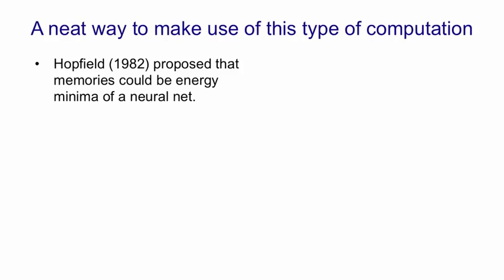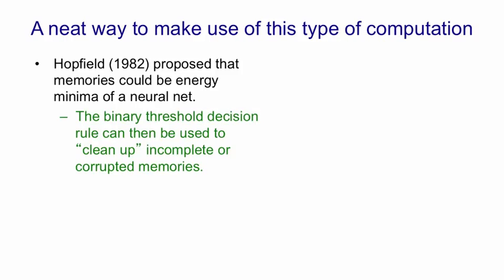Now what Hopfield suggested was that we could make use of this kind of energy-based model that settles to a minimum of its energy for storing memories. So he had a very influential paper in 1982 that proposed that memories could be energy minima of a neural net with symmetric weights. The binary threshold decision rule can then take partial memories and clean them up into full memories. So the memory could be corrupted by part of it being wrong, or part of it could just be undecided, and we can use the net to fill out the memory.